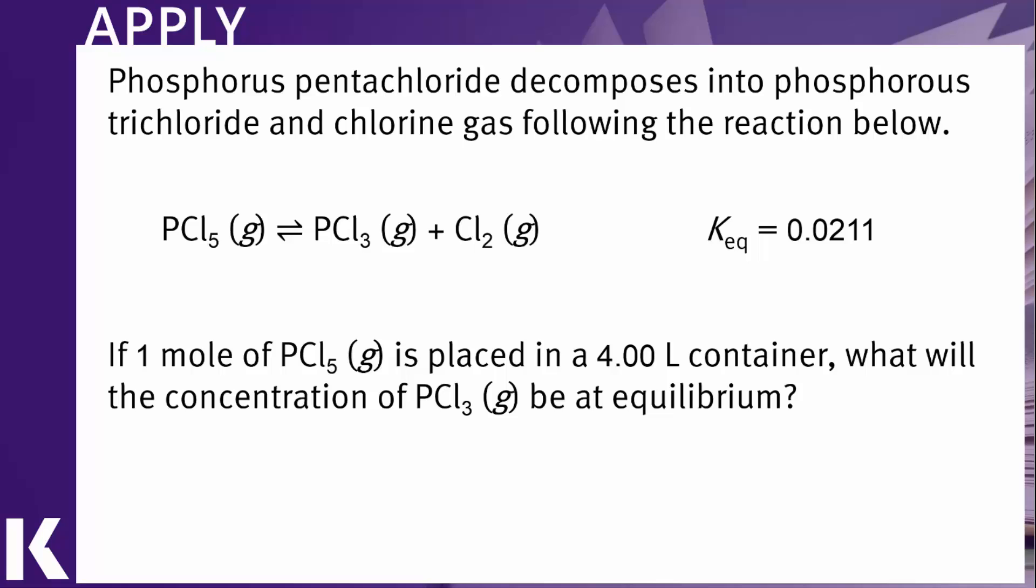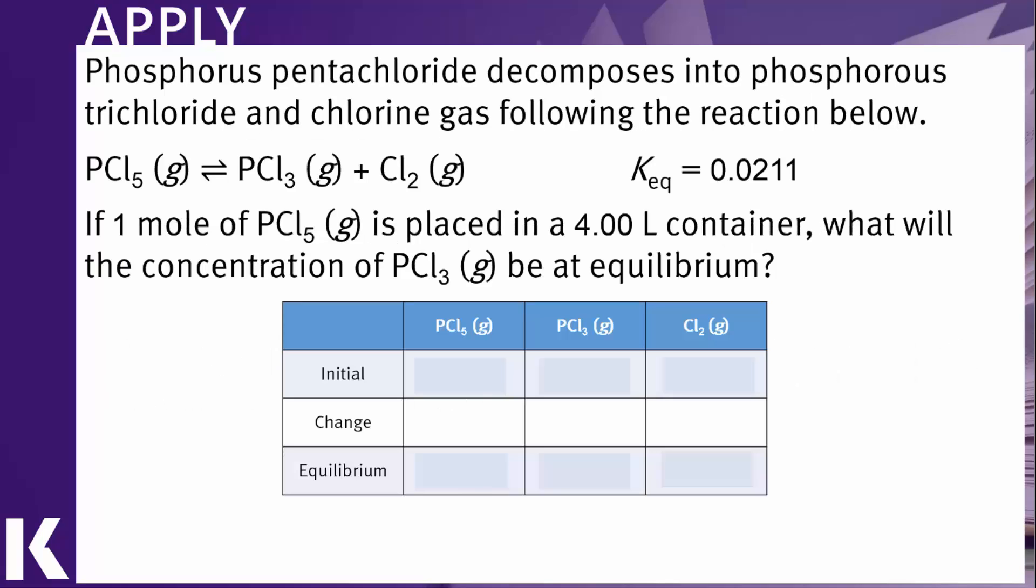So what do we have? We have one mole of PCl5 in a four liter container. We want to know the PCl3 concentration at equilibrium. So let's set up our ICE table. And initially our PCl5 is 0.25 molar. We have no PCl3 nor do we have any chlorine gas.